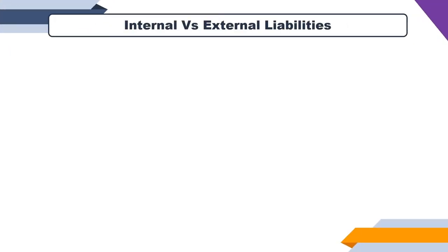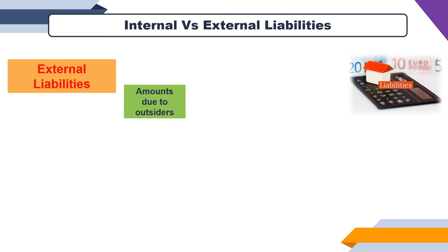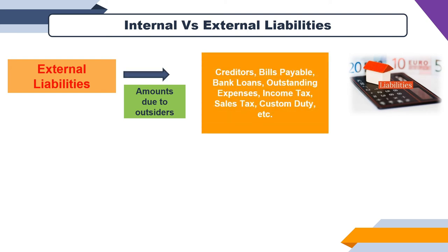Next, let's understand the difference between internal and external liabilities. Internal liabilities are liabilities related to partners, and external liabilities are liabilities related to outsiders. We must pay outsiders first, then settle internal liabilities. External liabilities are amounts due to outsiders — examples include creditors, bills payable, bank loan, outstanding expenses, income tax, sales tax, and custom duty.